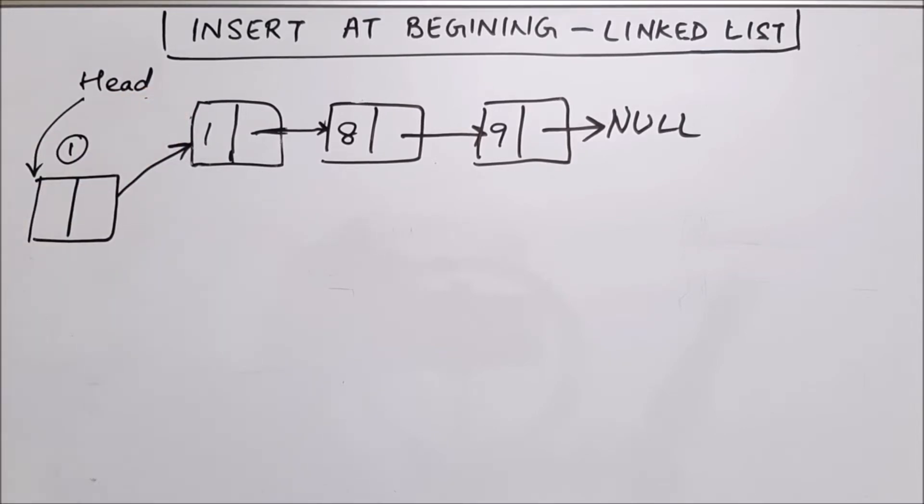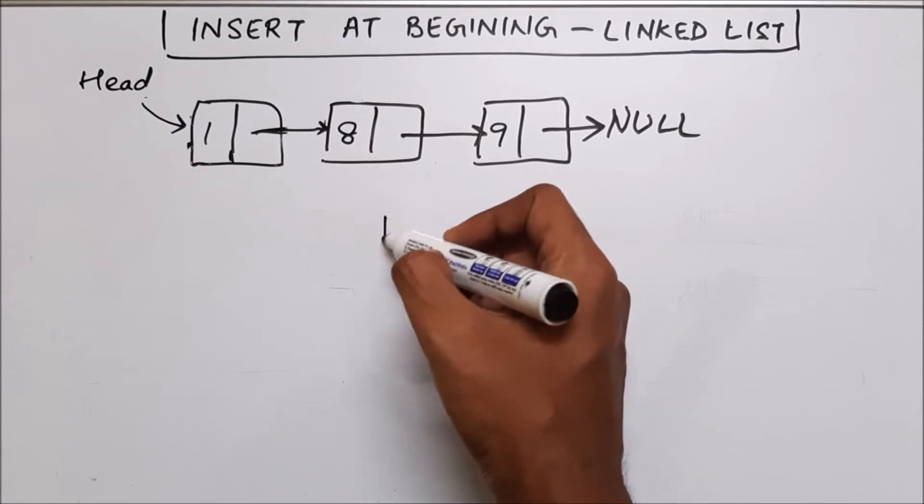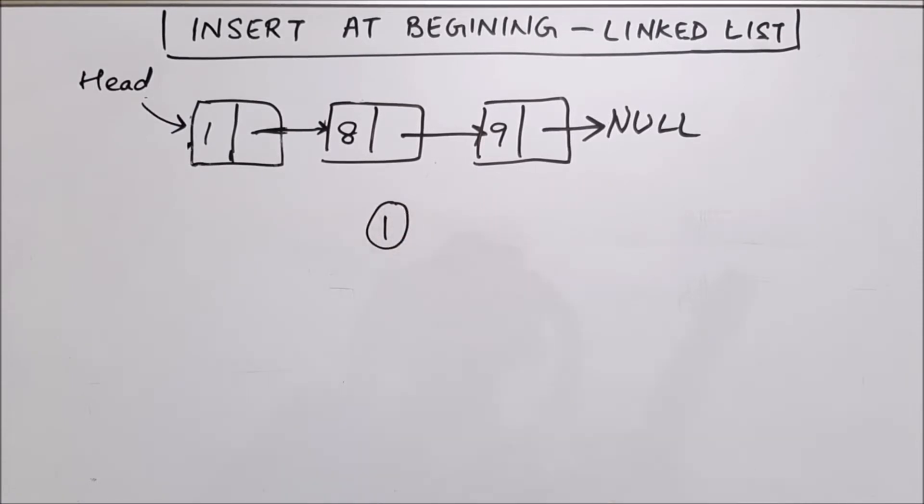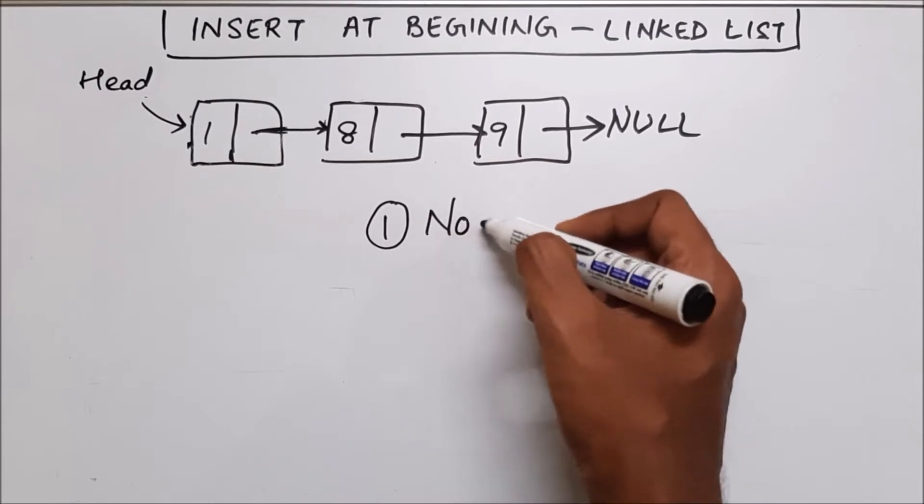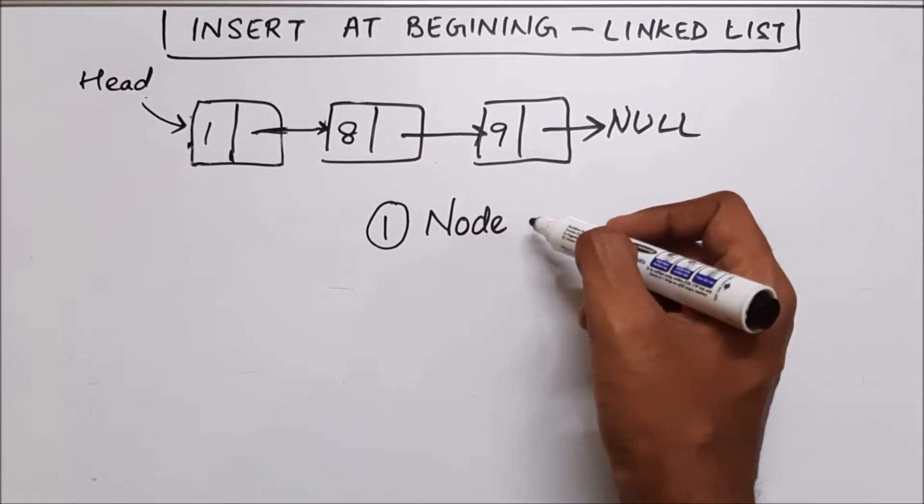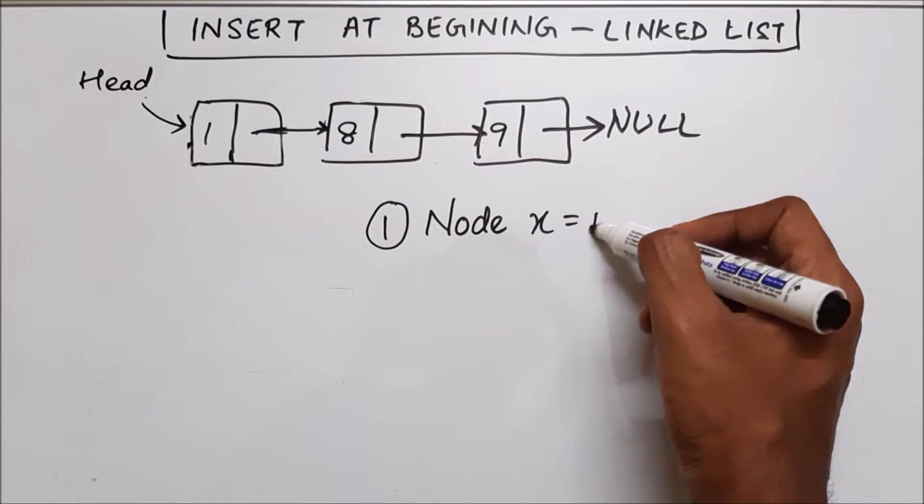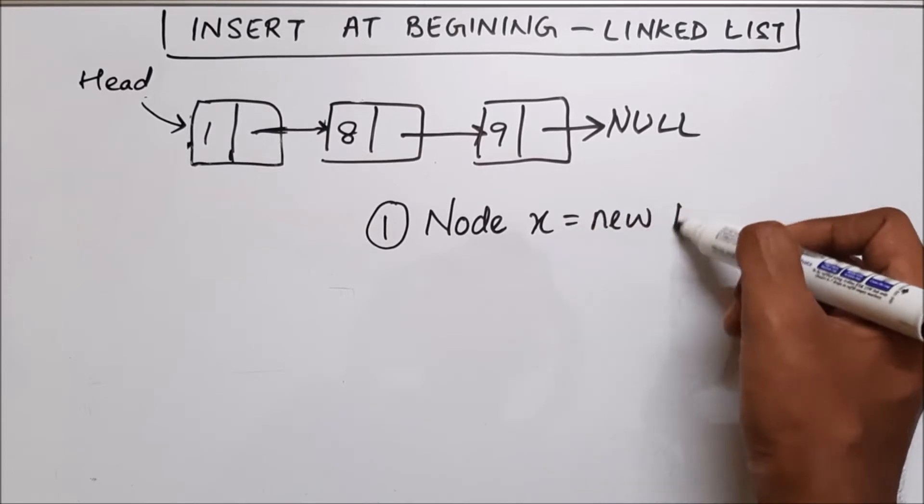So let's see how we can do that. In order to add a new node, the first thing we require is a node. So how we will create it, we will create it something like this and say node x equal to new node.